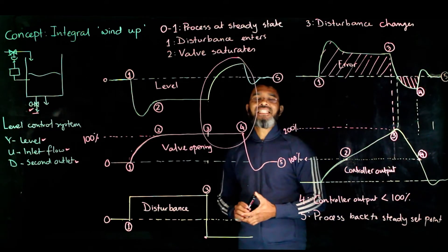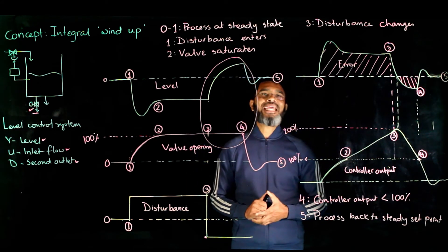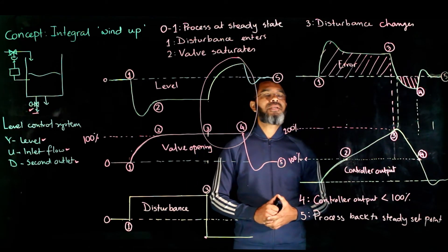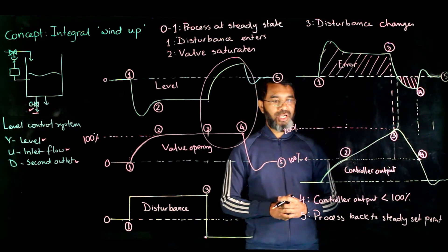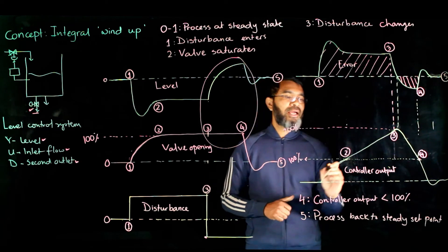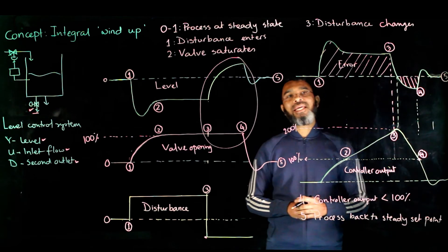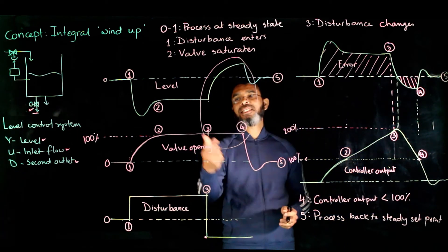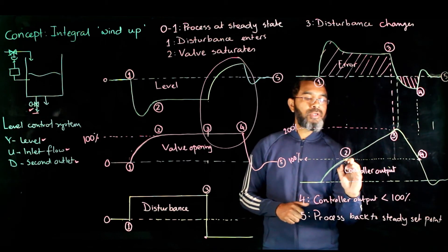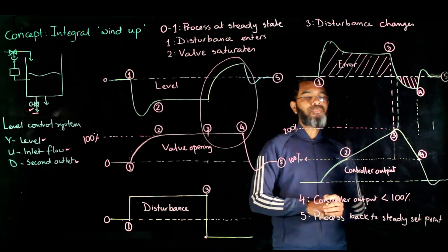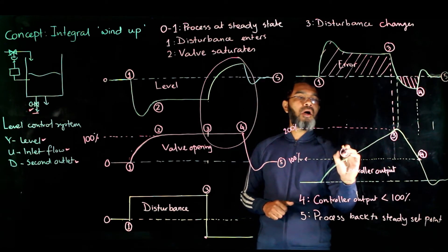This is the concept of integral windup — it happens because the integral action keeps increasing when there is a persistent error. The way to get rid of this integral windup situation is: when the controller calculates the control action beyond the physically realizable value — in this case 100% valve opening — the integral action is turned off.